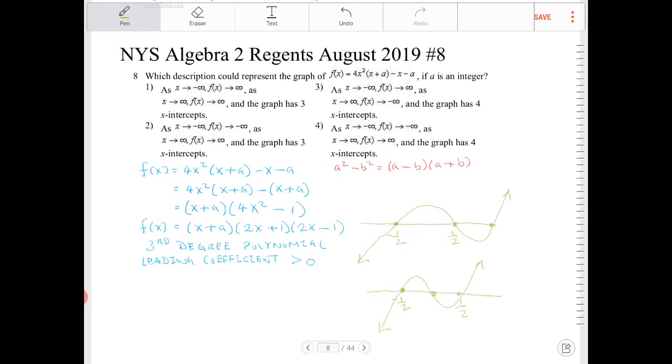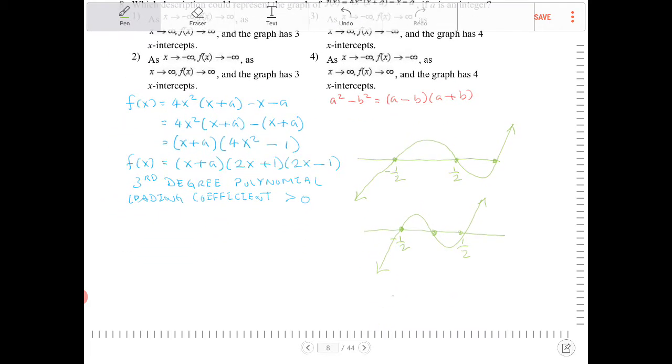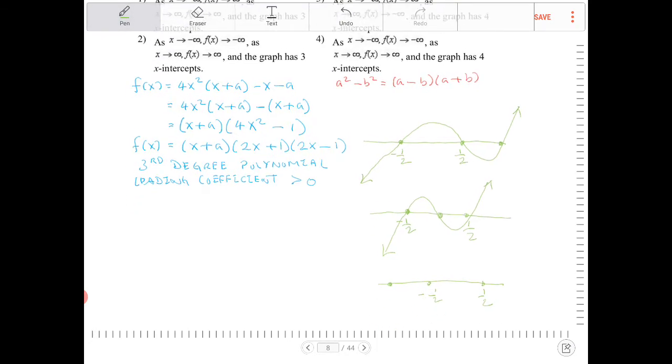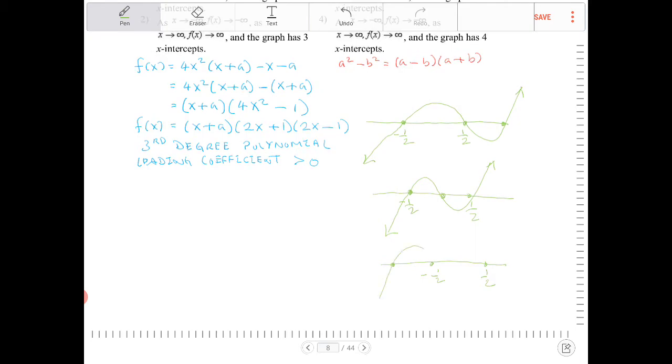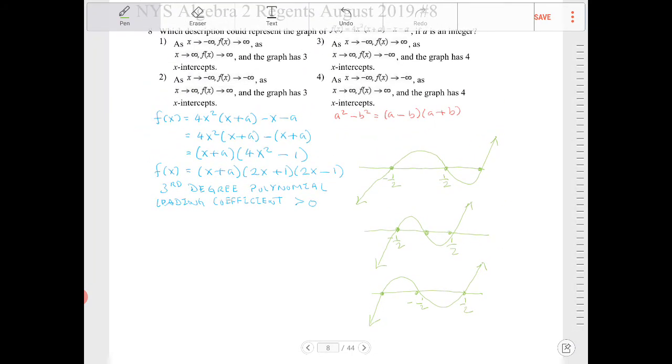Or if a was to the left of negative half. So it really doesn't matter where a is. A could be to the left of negative half, or it could be in between, or it could be to the very, very right. But regardless, we're going to have the same kind of end behavior.